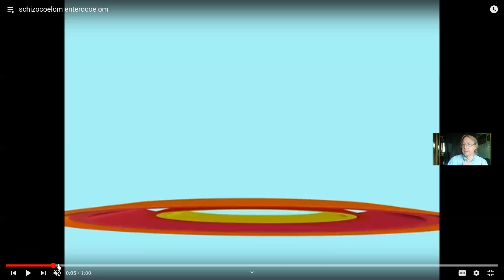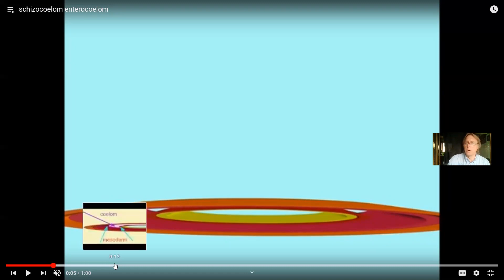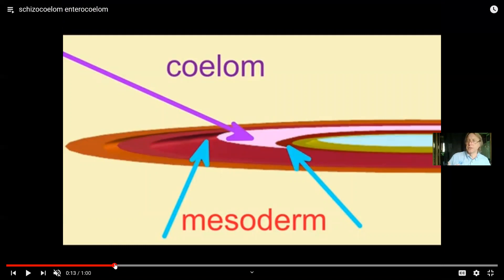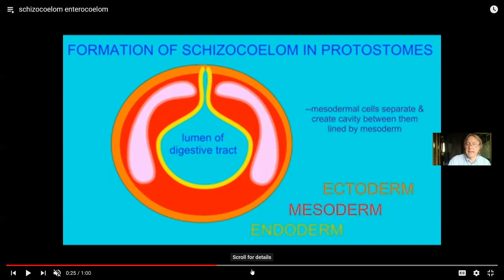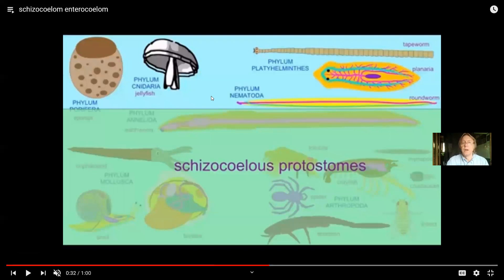One other feature before we get into the groups is what's called a coelom. I am hollow on the inside. If you were to crack open my chest in heart surgery, my heart isn't stuck to my lungs and my lungs aren't stuck to the body wall — they're in spaces. There's a pericardial cavity, a pleural cavity around the lungs, a thoracic cavity, and an abdominal pelvic cavity. My organs are hung in a space. I'm not solid. Neither is a bug or a mollusk. We have what are called body cavities, which we call coeloms.